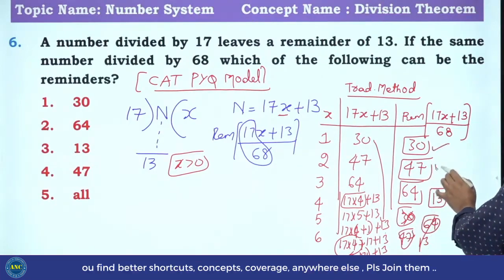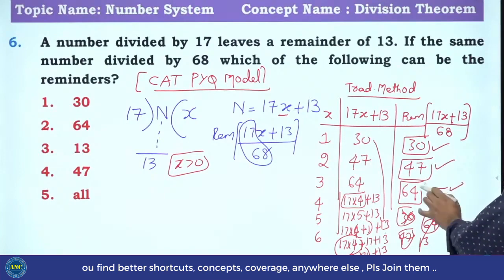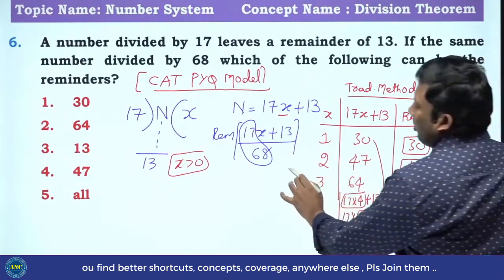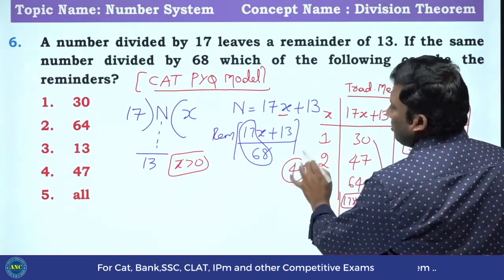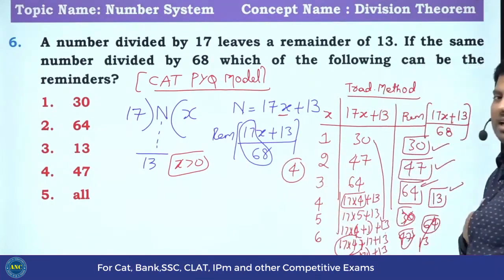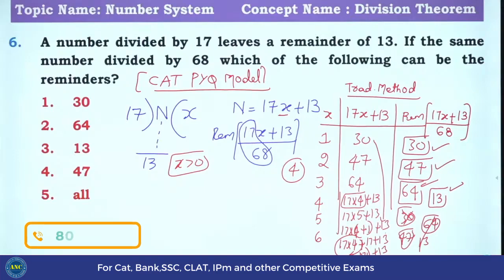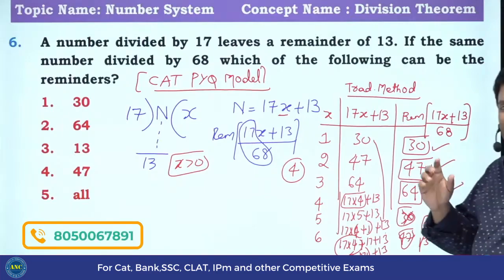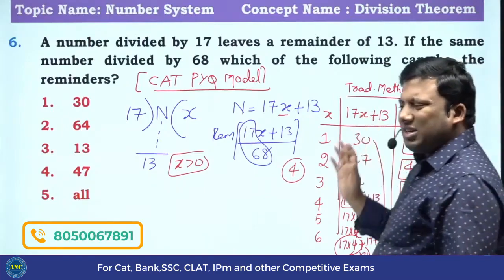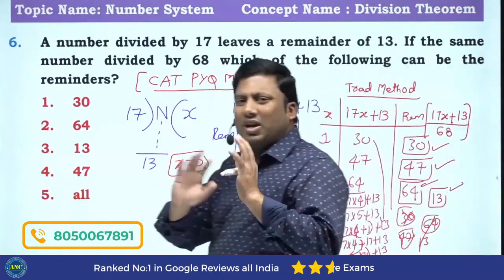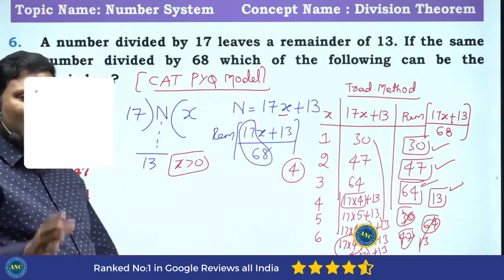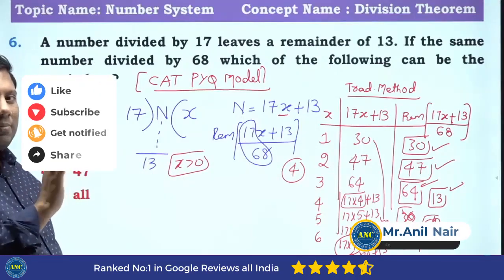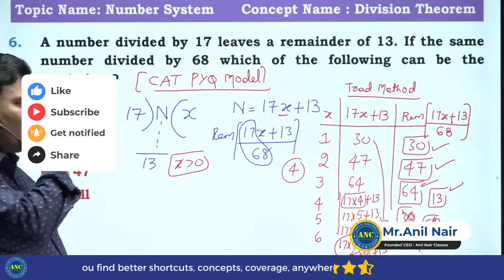So how many possible remainders can the number have? 4. The substitution method shows this, but substitution is not what is most important here.